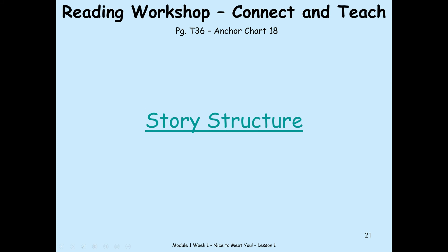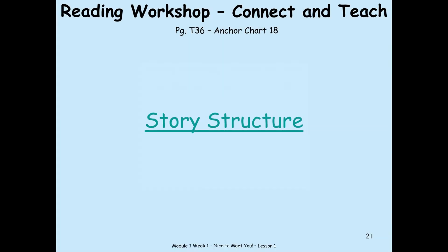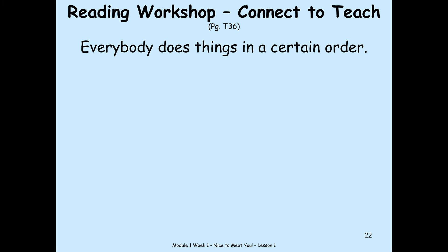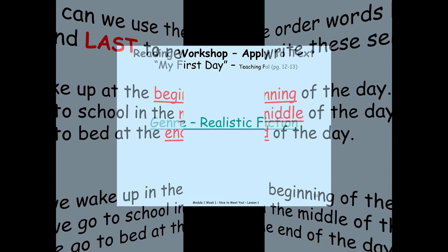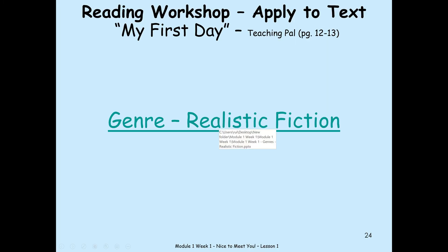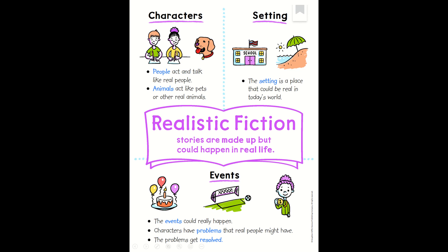Story structure — this is before you go into your reading and it teaches about the story. This is one of the anchor charts that you can print and laminate with legal-size paper. It teaches them beginning, middle, and end. Then you go over to genre — each story will have a genre poster, such as realistic fiction. Again, you can print it, laminate it, and put it up on your board with legal-size paper.